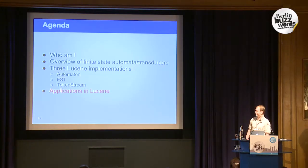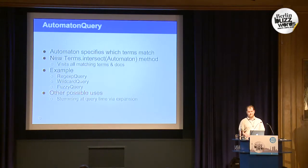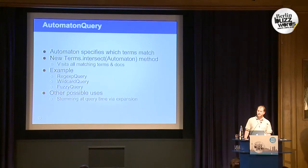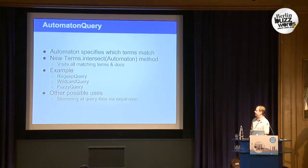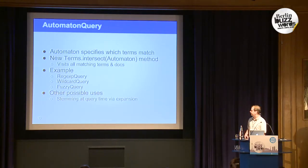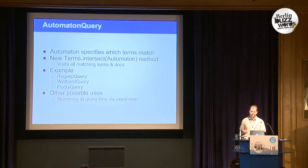Now the interesting part — what are the real-world applications? The first thing we did is implement a lot of queries as FSAs: regular expressions, wildcards, and fuzzy query. Historically these were really slow in Lucene. They're not necessarily fast now, but they're a lot faster than before. It's also simpler because we have the same execution path for a wildcard and a regular expression — a wildcard is just a more limited form.